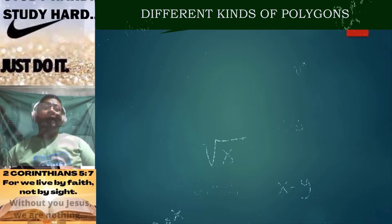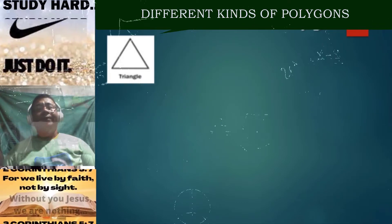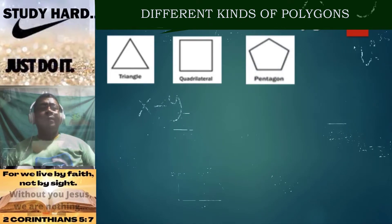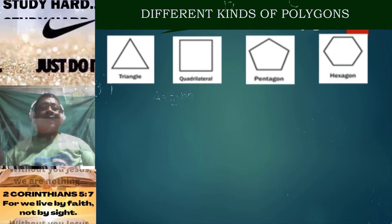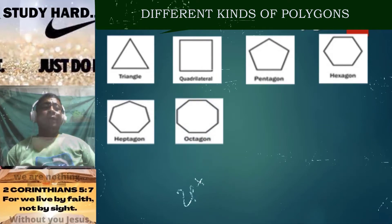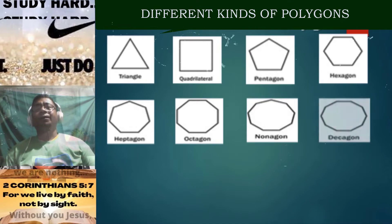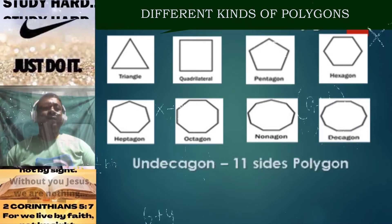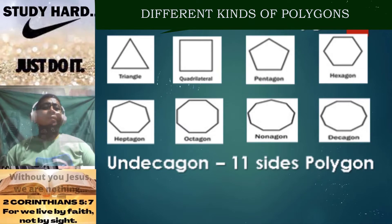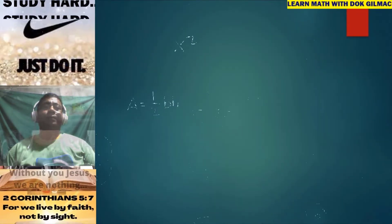Consider the different kinds of polygon: a three-sided polygon is a triangle; a four-sided polygon is a quadrilateral; a five-sided polygon is a pentagon; a six-sided polygon is a hexagon; a seven-sided polygon is a heptagon; an eight-sided polygon is an octagon; a nine-sided polygon is a nonagon; a ten-sided polygon is a decagon; an eleven-sided polygon is an undecagon; and a twelve-sided polygon is a dodecagon.